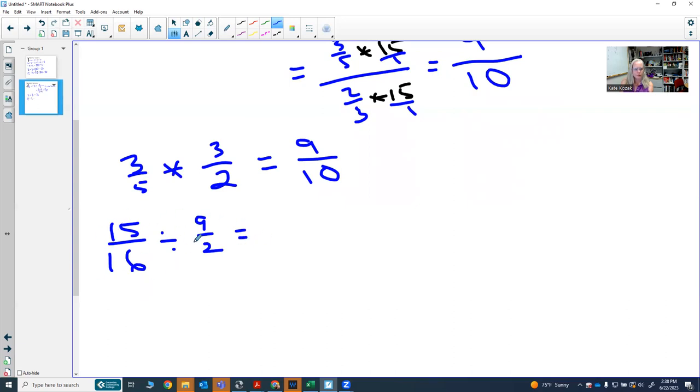We could write this as 15 sixteenths over top of nine over two and then clear the fractions within the fractions. Or we can think of it as 15 over 16 and then multiply it by the reciprocal of two over nine.